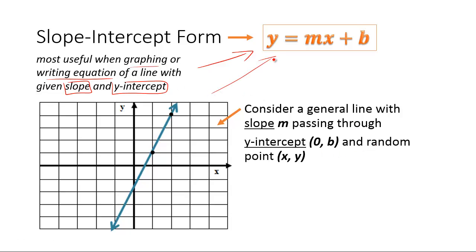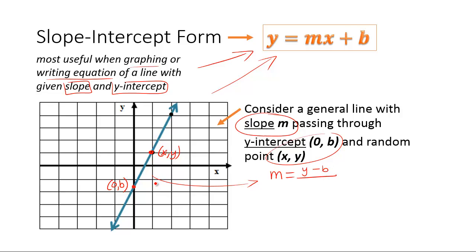So how is this form created? This form was created by taking a general line with slope m that passes through a y-intercept of (0, b) and a random point (x, y) somewhere on the line. It then uses the slope formula for these two points, taking the y values away from each other — so y minus b as the rise and x minus 0 as the run — and solving to give you the slope-intercept format, which is the desired line equation format.